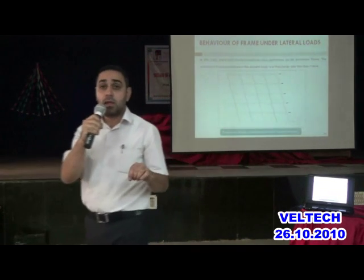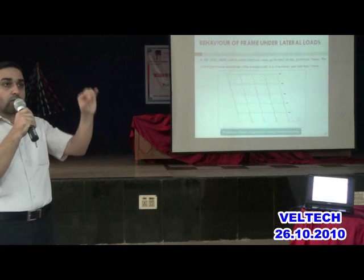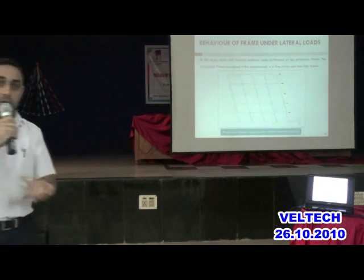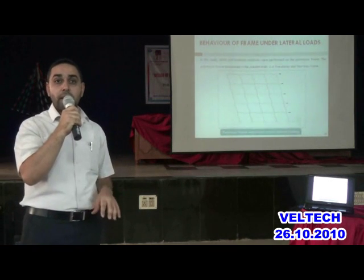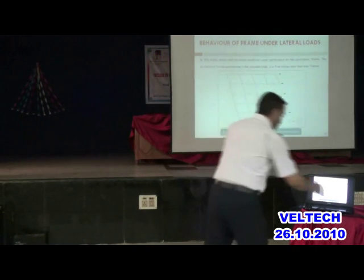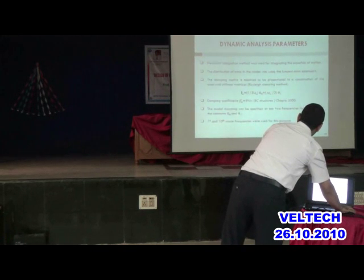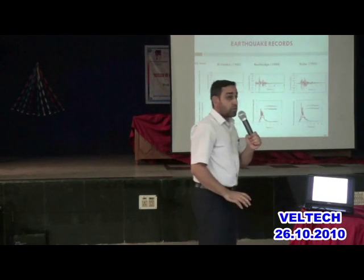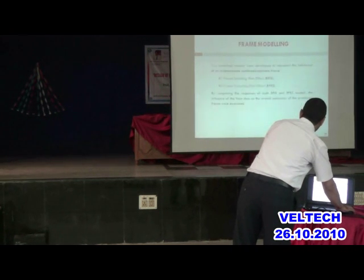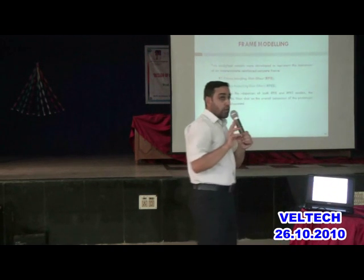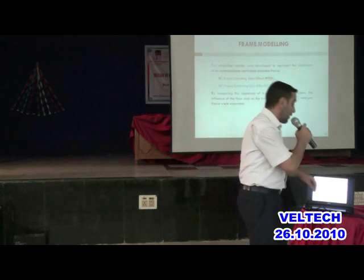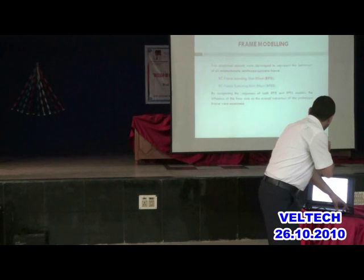We extended the analysis to the full frame level — whatever was done for the individual joint needed to be applied to the entire prototype frame. We used dynamic analysis parameters with three earthquake ground motions: El Centro, Northridge, and the Kobe earthquake. Two models were compared: a bare frame excluding the slab and a frame including the slab, to assess the difference in structural response.